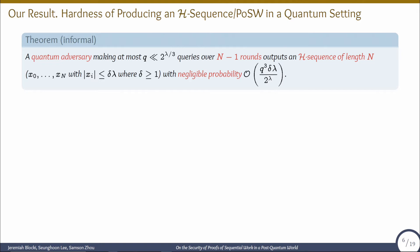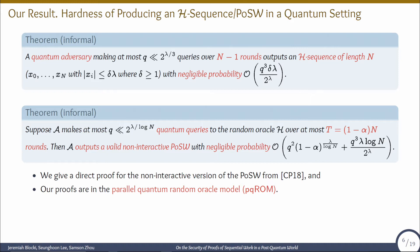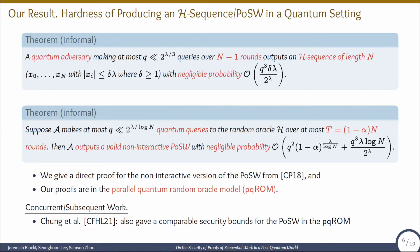Our main result can be summarized as follows. First, we proved that a quantum adversary making Q queries over n-1 rounds can output an H sequence of length n only with negligible probability. Second, a quantum adversary making Q queries over less than n rounds outputs a valid non-interactive proof of sequential work only with negligible probability. We give a direct proof for the non-interactive version from Cohen and Peterczak, obtained by applying the Fiat-Shamir transform, and our proofs are in the parallel quantum random oracle model. There is also a concurrent and subsequent work by Chung et al. giving comparable security bounds.